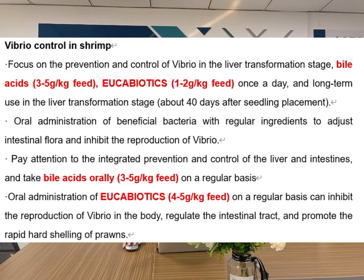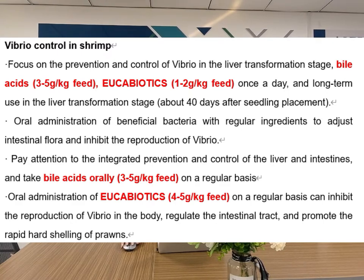Pay attention to the ongoing prevention and control of the liver and intestines. Take bio acids orally at 3 to 5 g per kg feed on a regular basis. Oral administration of eucabiotics at 4 to 5 g per kg feed on a regular basis. This can inhibit the production of vibrios in the body, regulate the intestinal tract, and promote the rapid molting of shrimp.